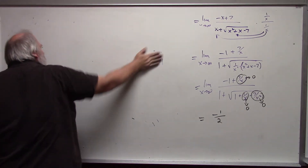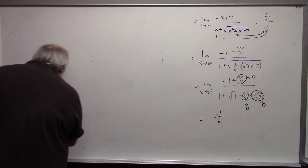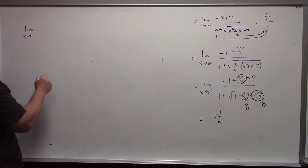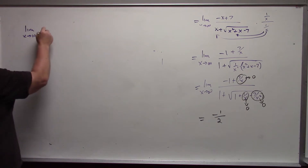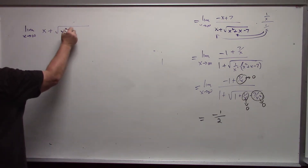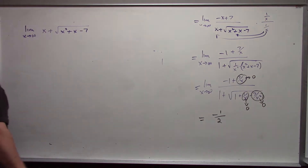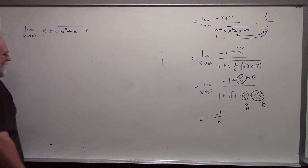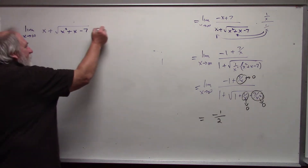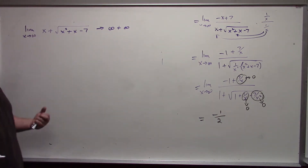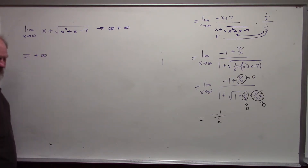The second problem is really simple — just a reminder. Suppose we had the limit as x approaches infinity of x plus the square root of x squared plus x minus 7. In this case, it is not indeterminate, because both the first and second parts are approaching positive infinity. Rather than a tug-of-war, they are working together, so the result is simply positive infinity.